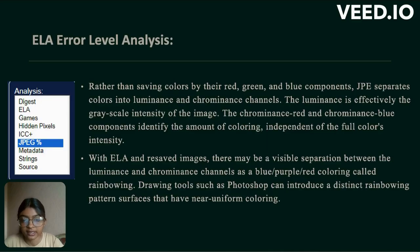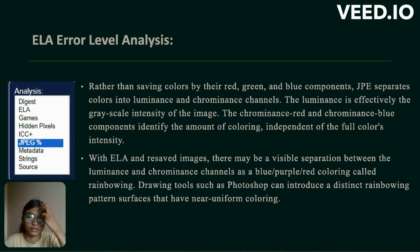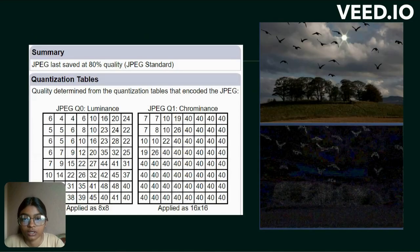Next is error level analysis. Rather than saving colors by their red, green and blue components, JPEG separates color into luminance and chrominance channels. The luminance is effectively the grayscale intensity of the image, and the chrominance identifies the amount of coloring dependent upon the full color intensity. With error level analysis on a resaved image, there may be a visible separation between the luminance and chrominance channels as a blue-purple-red coloring called rainbowing. Drawing tools such as Photoshop can introduce a distinct rainbowing pattern on surfaces that have near-uniform coloring. Here you can see the JPEG percentage with luminance and chrominance values.